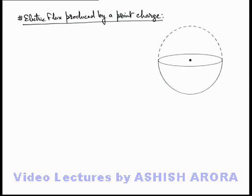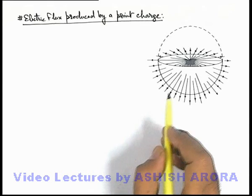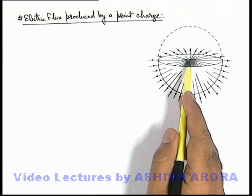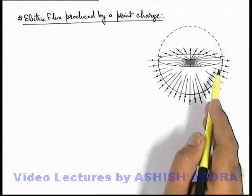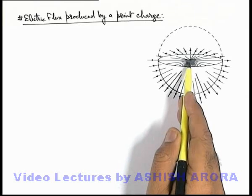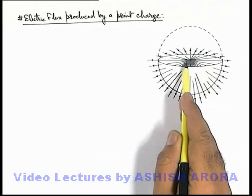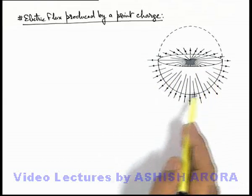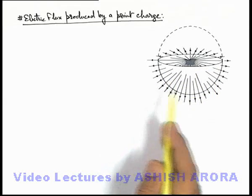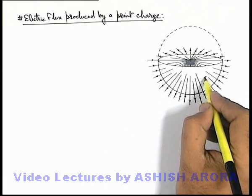The modified diagram shows that if we draw the electric line of force, it will look like this. From the central charge, electric lines are originated. From the lower hemisphere, all the electric lines originating from below the median plane will come out from the lower hemisphere.